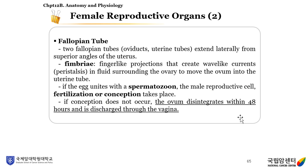The fallopian tubes: two fallopian tubes extend laterally from the superior angles of the uterus. Fimbriae are finger-like projections that create wave-like currents (peristalsis) in fluid surrounding the ovary to move the ovum into the uterine tube. If the egg unites with a spermatozoon in the fallopian tube, fertilization takes place. If conception or fertilization does not occur, the ovum disintegrates within 48 hours and is discharged through the vagina.